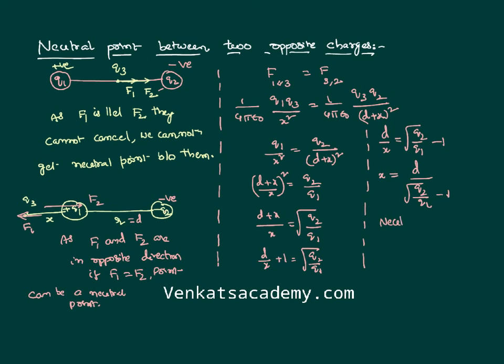Here, x is the location of the neutral point, measured from q1 towards the outside — towards the left. If you want to calculate from q2, the distance becomes x plus d. It is also possible to find a neutral point outside q2 on the same line. Be clear that when charges are opposite in nature, the neutral point is not between them — it is beyond them. That's it, thank you.